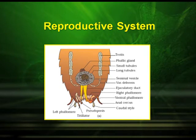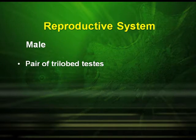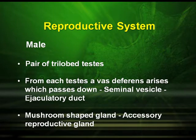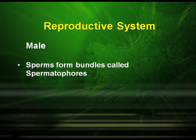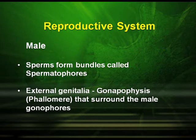The reproductive system of cockroach: in the male, there is a pair of trilobed testes. From each testis a vas deferens arises, which passes through the seminal vesicle into the ejaculatory duct. They have an accessory reproductive gland which is mushroom shaped. The sperms form bundles called spermatophores, and the external genitalia is the gonapophysis — the phallomere — that surrounds the male gonopore.